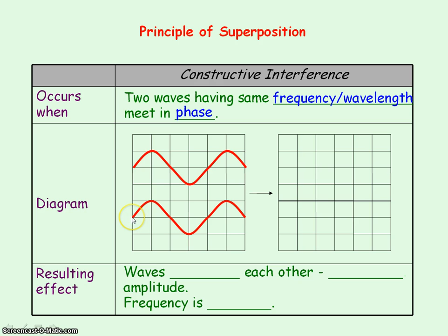At the first point, both waves have zero displacement, so the resultant is zero. At the next point, both of the waves have a plus one displacement, so the resultant will be plus two at that point. At the next point along, again they're at zero displacement. At the next point along, both have minus one displacement, so that will give you a resultant of minus two.